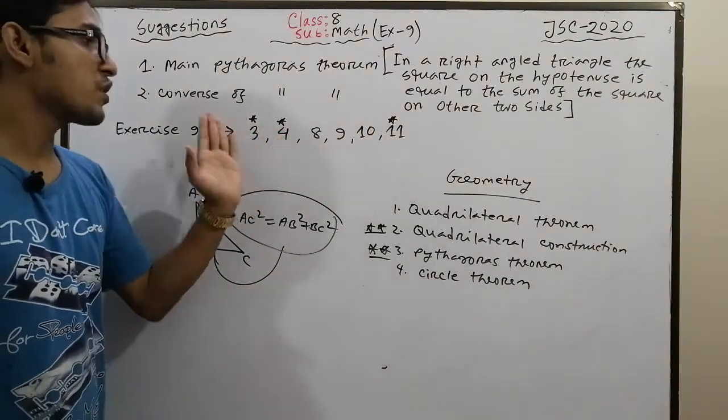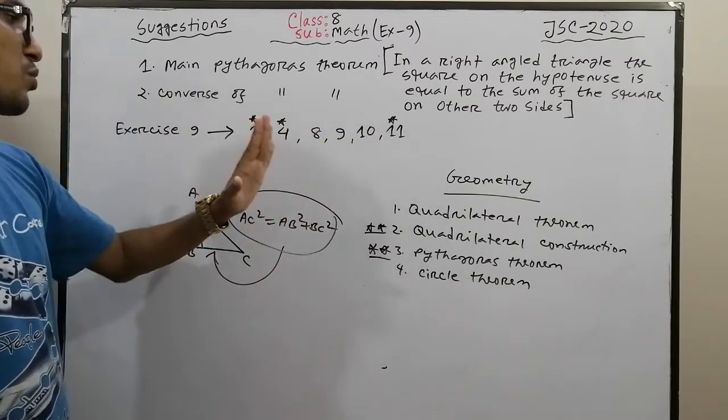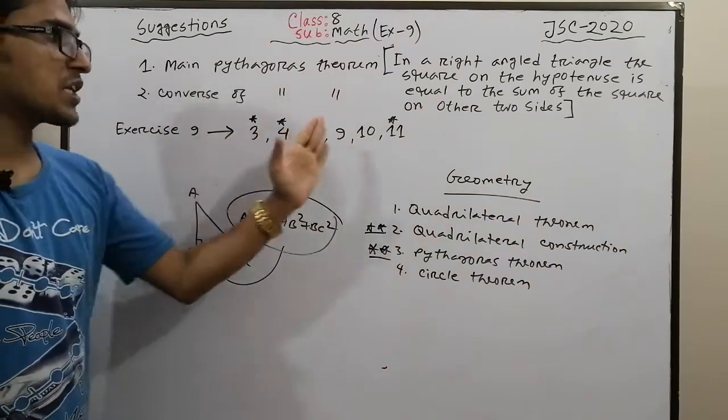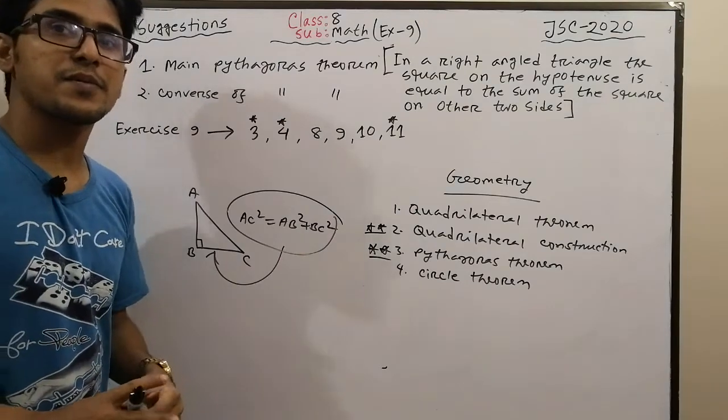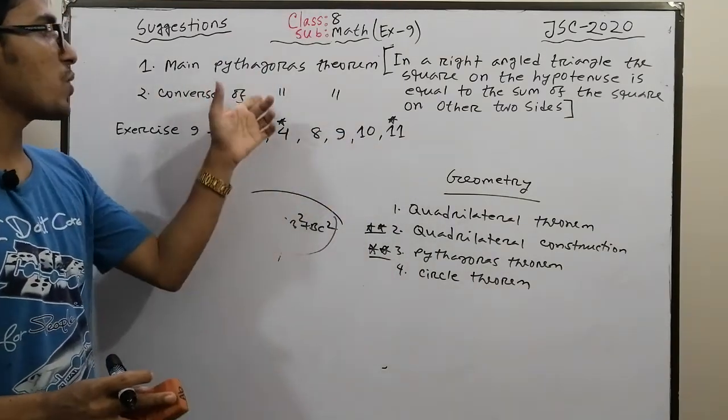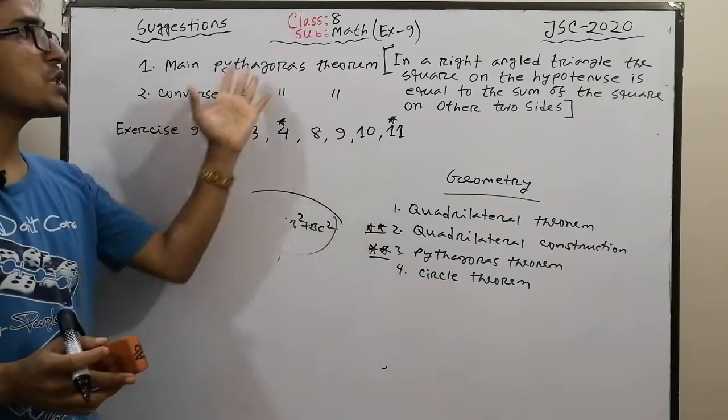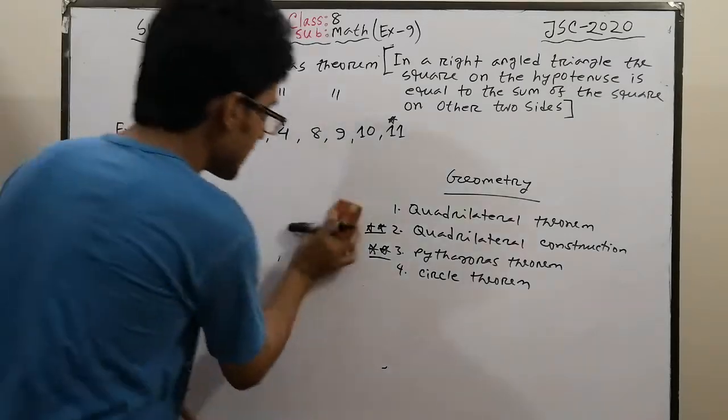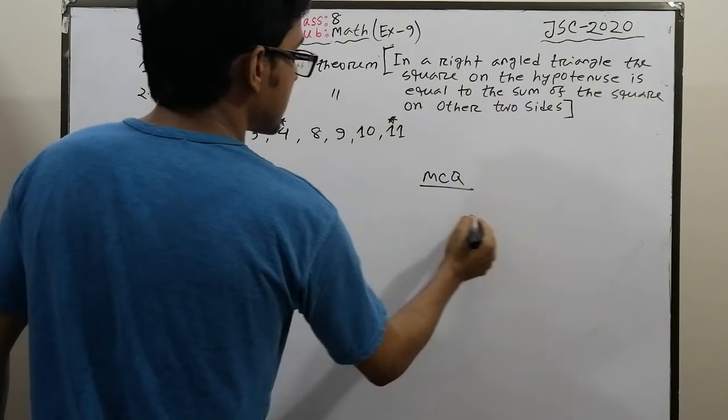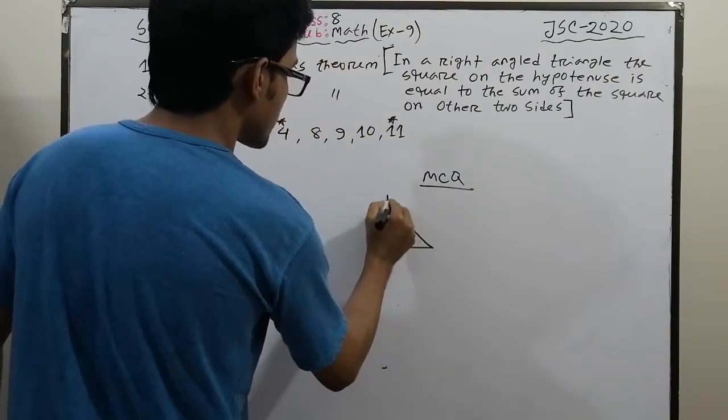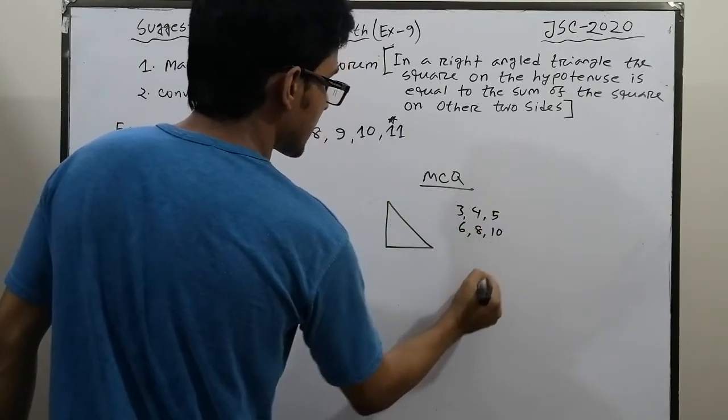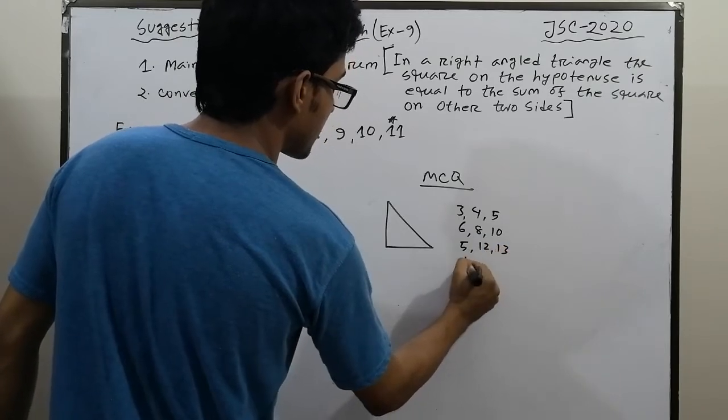Questions 3, 4, 8, 9, 10, and 11 are very important. These are important for exams. The MCQ topic is about right-angled triangle measurements. Common examples are: 3-4-5, 6-8-10, 5-12-13, and 1-1-√2.